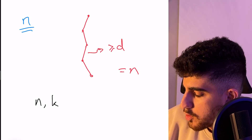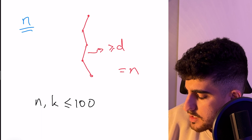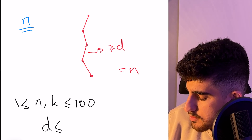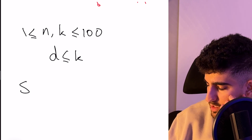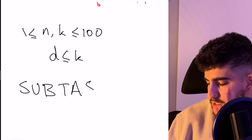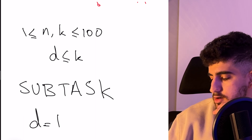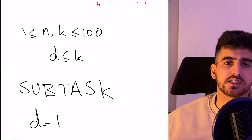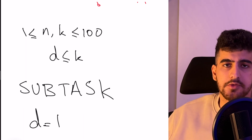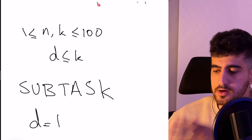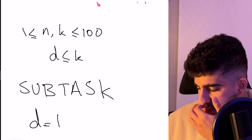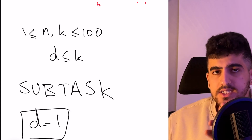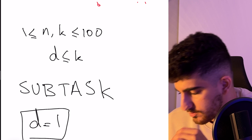The values of N, K, and D are given. N and K are both up to 100, and D is obviously less than or equal to K. First, I invite you to think about a subtask: forget about D and assume that D is equal to 1. Because all edges have weight at least 1, when D equals 1 there's no additional constraint — obviously one of the edges is greater than or equal to 1. So pause the video and think about this subtask.